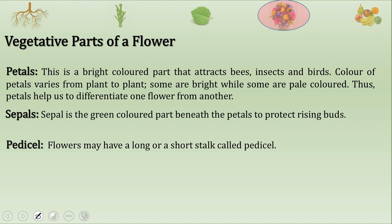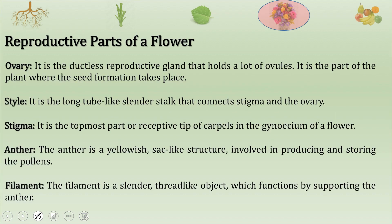Now let us see the reproductive parts of the flower. The ovary is a ductless reproductive gland that holds many ovules and is the part of the plant where seed formation takes place. The style is a long tube-like slender stalk that connects the stigma and the ovary. The stigma is the topmost receptive tip of the carpel and gynoecium. The anther is a yellowish sack-like structure involved in producing and storing pollen. The filament is a slender thread-like object that supports the anther.